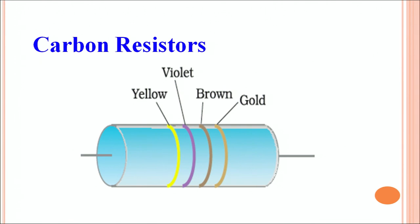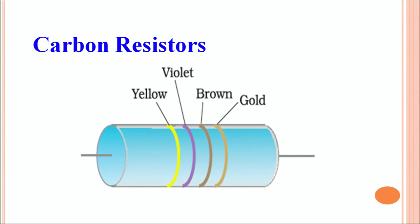You can see there are two leads and there are colored rings marked on it. Generally, there are four rings: three are some colors and the fourth colored ring is either golden or silver color. You have to read from the other end of this golden or silver colored ring. For example, here we will read: yellow, violet, brown and then golden.